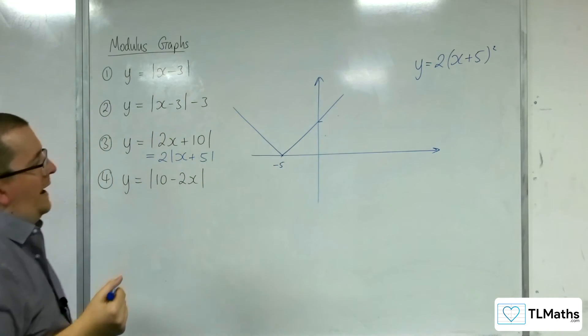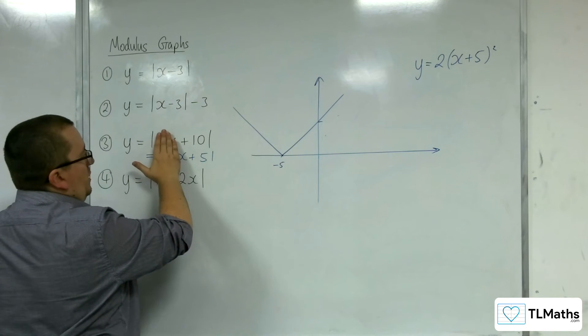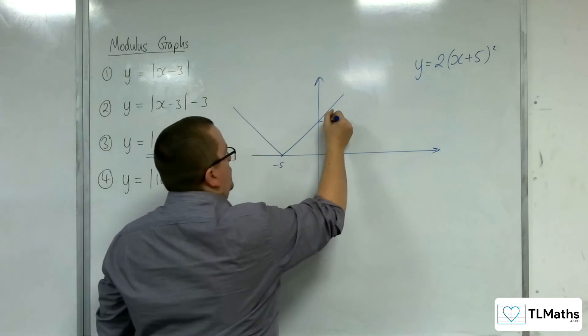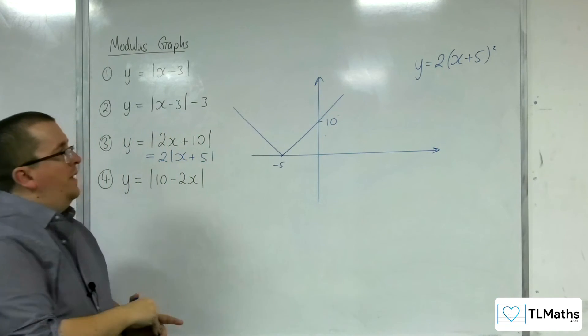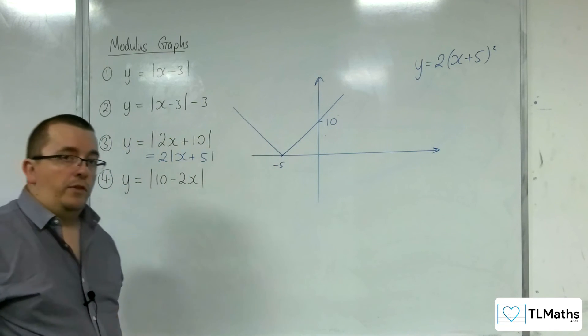And when x is 0, I get the modulus of 10, which is 10. And so that would be the sketch of number 3.